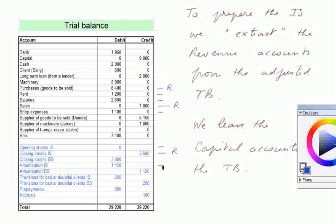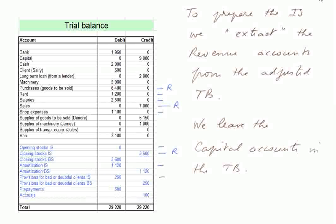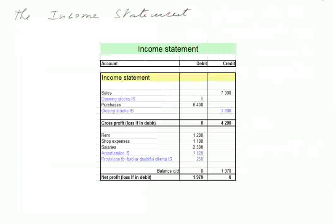Amortization IS is a revenue account because it's an extra account measuring a charge — in the sense of a loss of value of assets. Amortization BS is not. Provision for bad or doubtful clients IS is a revenue account. Provision for bad or doubtful clients BS is not. Prepayments and accruals are capital accounts, not revenue accounts.